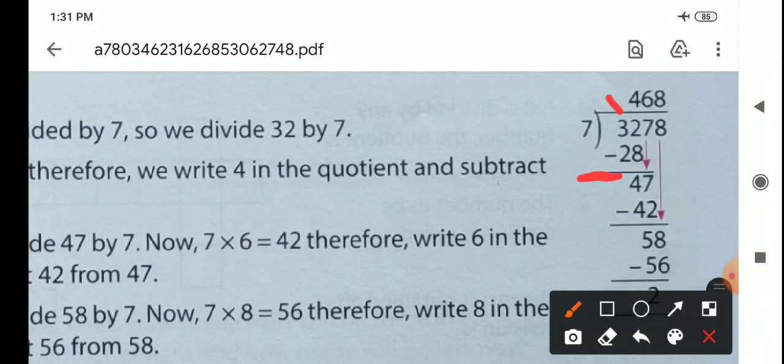Then bring down 7. 47. So 7 times 6 is 42. 47 minus 42 is 5.